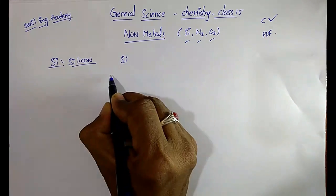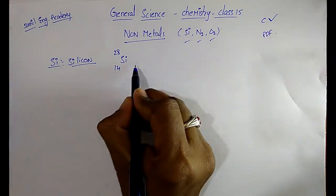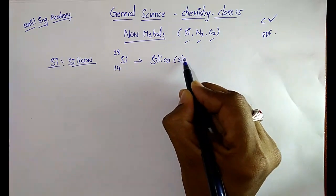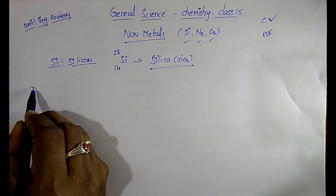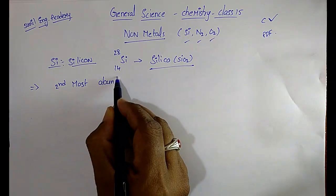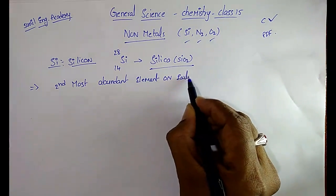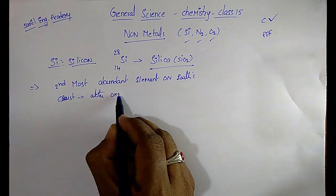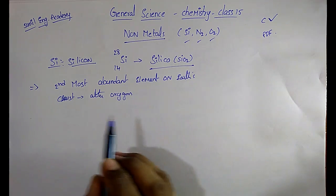The atomic number of silicon is 14 and mass is 28. It is available in the form of silica, that is silicon dioxide, SiO2. Silicon is the second most abundant element on the earth's crust. The first most abundant element is oxygen, and the second is silicon.